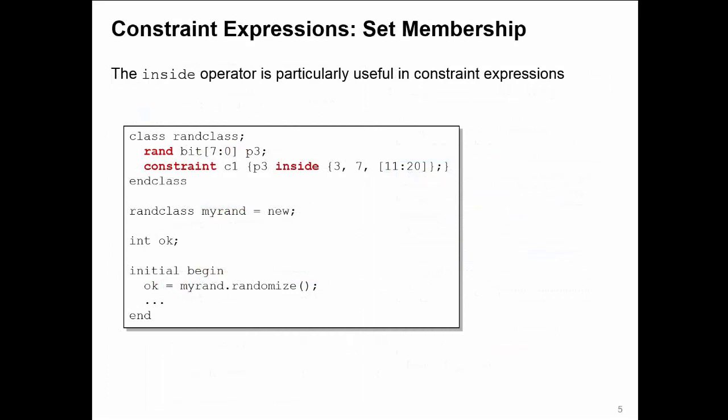Let's have a look at a couple of different constraints over the next few slides. Inside constraints are particularly useful when you want to build up a list of values that a property can be randomized within.